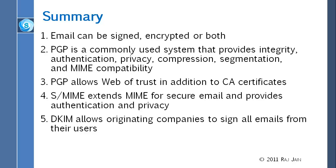If you download PGP, you can get everything done, and it is compatible with all systems because of MIME. PGP also invented the web of trust, so you don't really need to go to a company and pay for a certificate — though the web of trust has mostly disappeared now. The fourth point is that S-MIME extends MIME for secure mail and provides authentication and privacy. The fifth point is DKIM, which allows companies to sign emails — it proves the mail came from that company, but it doesn't verify the individual sender or whether the email content itself is legitimate.